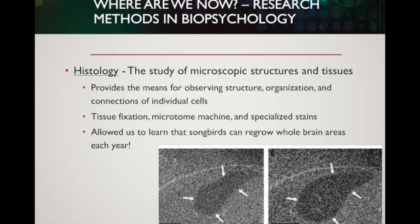For example, histology allowed us to learn — from research in the early 90s — that male songbirds would actually regrow whole new brain tissue. At the time, we didn't believe you could regrow brain tissue; whatever you had in adulthood was just going to go downhill. But this research showed that songbirds were regrowing whole new brain areas every breeding season in association with singing. Songbirds use song to attract mates and defend territories.